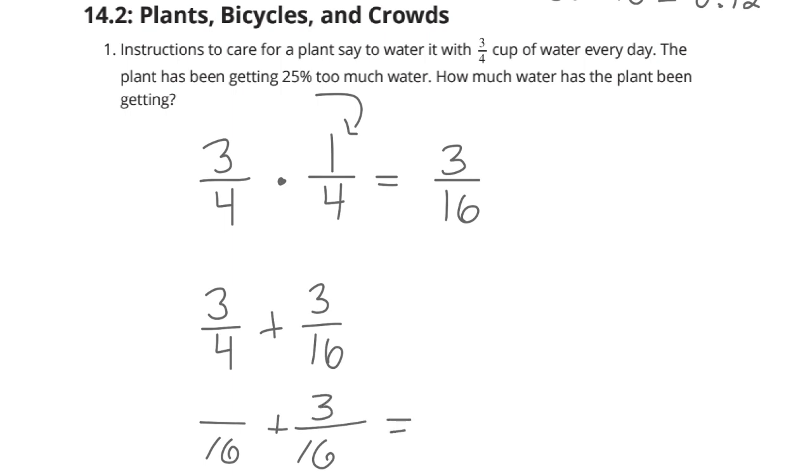You have 3/16 there. 4 times 4 is 16, so 3 times 4 is 12. 12/16 is the equivalent version of 3/4. Add those together and we get 15/16 cups of water every day.